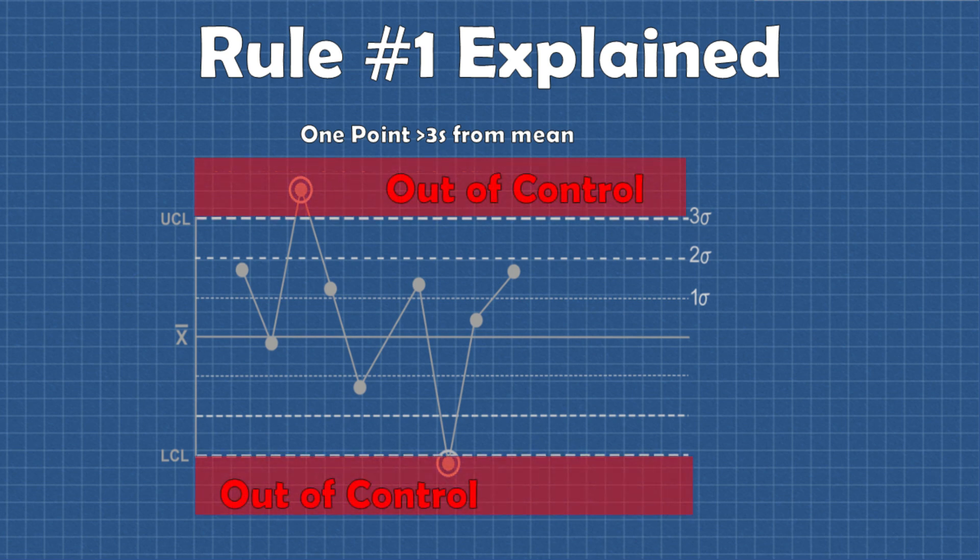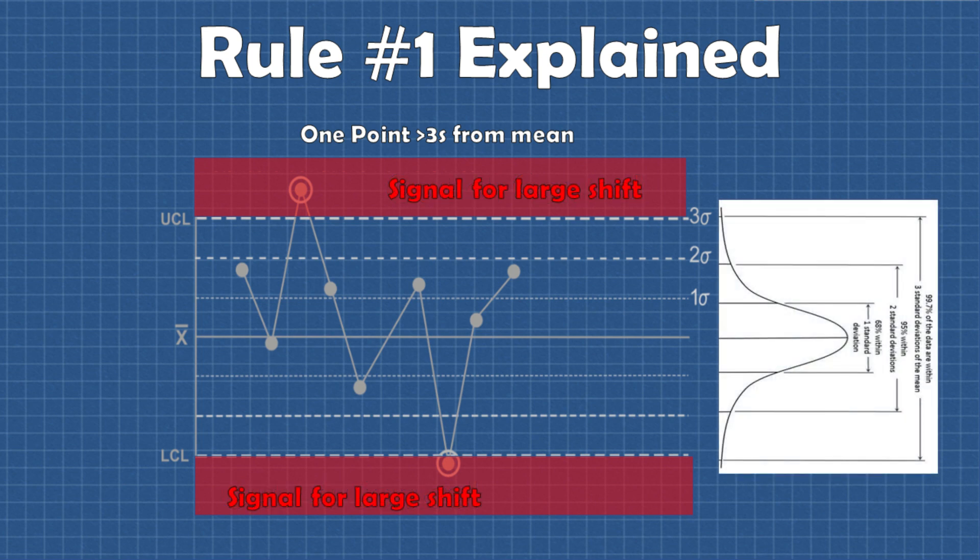Rule number one is pretty straightforward. This rule will detect any large shifts in the process and provides the strongest evidence for special cause variation. If any data point falls outside of three standard deviations from the mean we can be pretty confident that we have a signal. And this really comes down to the empirical rule. The farther the point is outside of the three sigma limits the stronger the evidence for special cause variation.